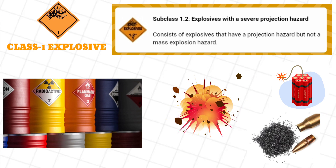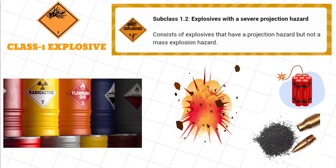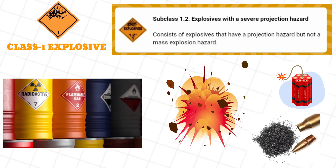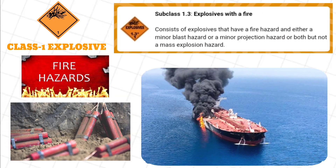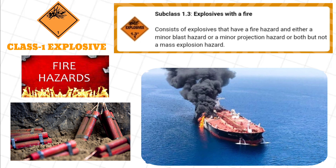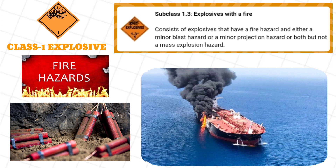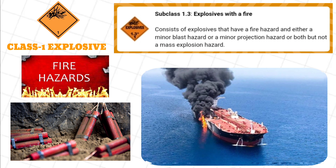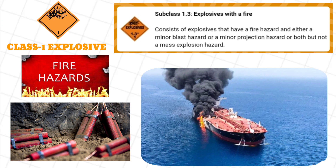Subclass 1.2, Explosives with a severe projection hazard, consists of explosives that have a projection hazard but not a mass explosion hazard. Subclass 1.3, Explosives with a fire hazard, consists of explosives that have a fire hazard and either a minor blast hazard or a minor projection hazard or both, but not a mass explosion hazard.